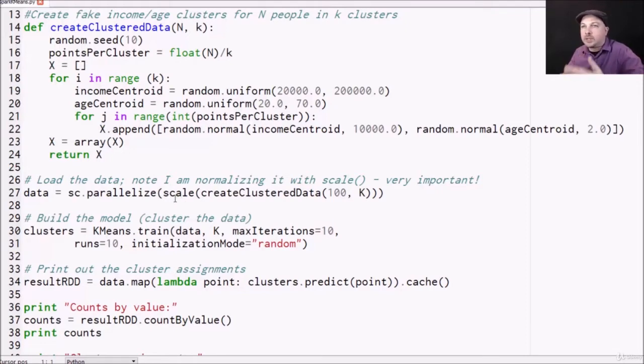And finally, we parallelize the resulting list of arrays into an RDD using parallelize. So now our data RDD contains all of our fake data.